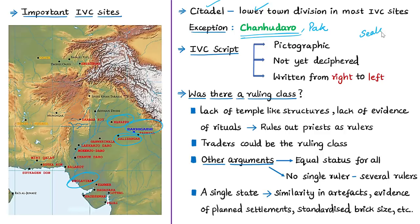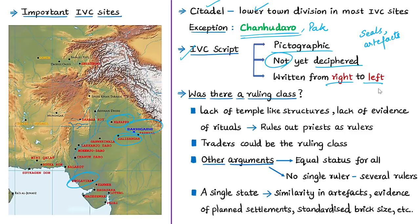The IVC script was a pictographic script containing many pictures and signs, but these have not yet been deciphered. One thing is clear: the script was written from right to left, like Urdu, because some seals show wider spacing on the right side and cramping on the left side — as if the engraver began working from the right and ran out of space on the left.